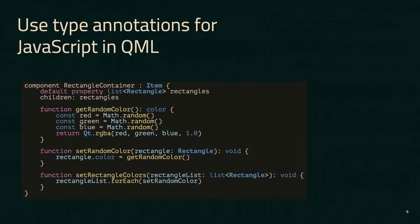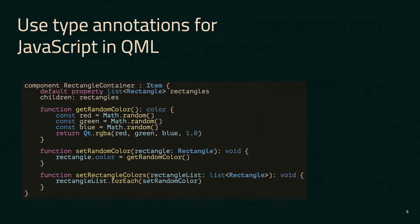For example, in this get random color function, it's expected to return a color value. In the set random color function, it accepts an argument of a rectangle component. So you have that type checking there — it's for your organization, and also later when you get to the process of compiling QML code, which we'll talk about in a bit, we actually have that information about what to do. Here you can see a couple of examples of how I've used type annotation for writing JavaScript in QML.